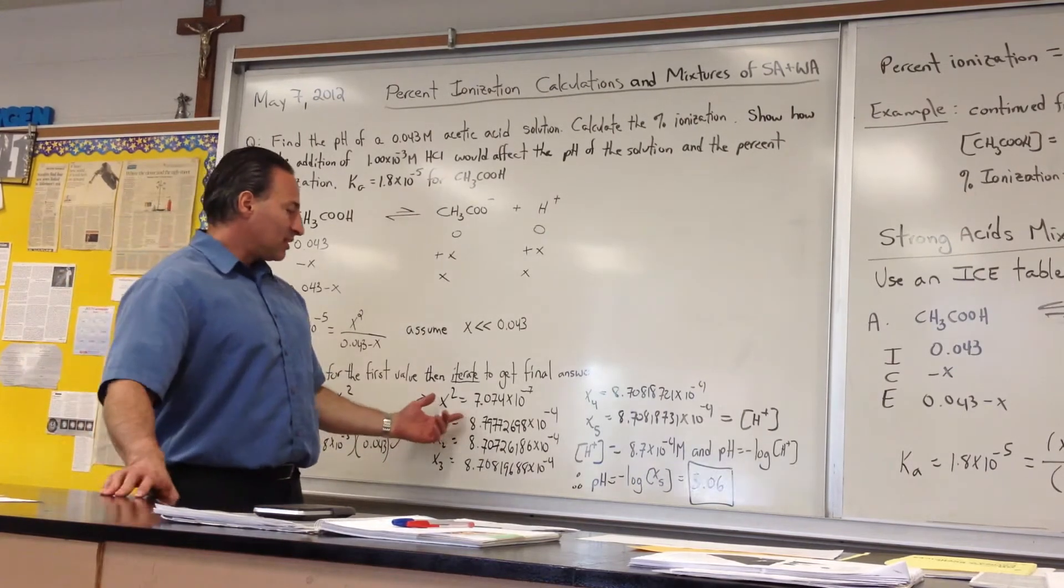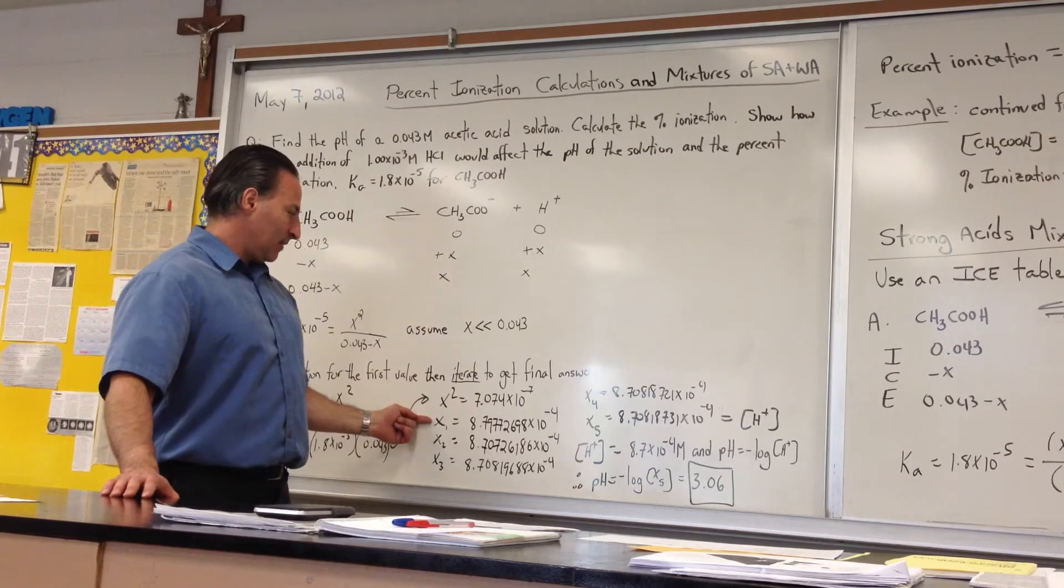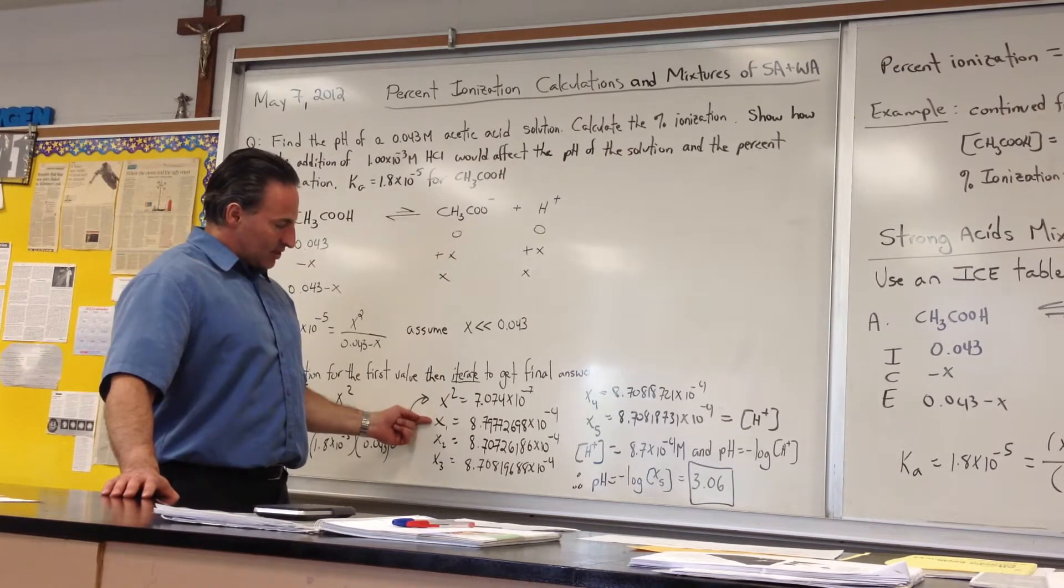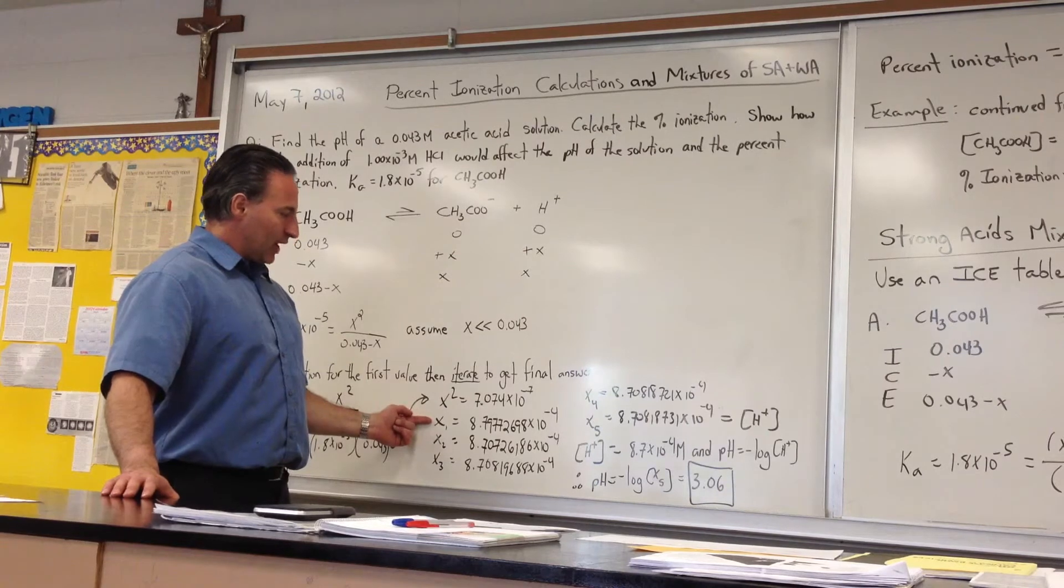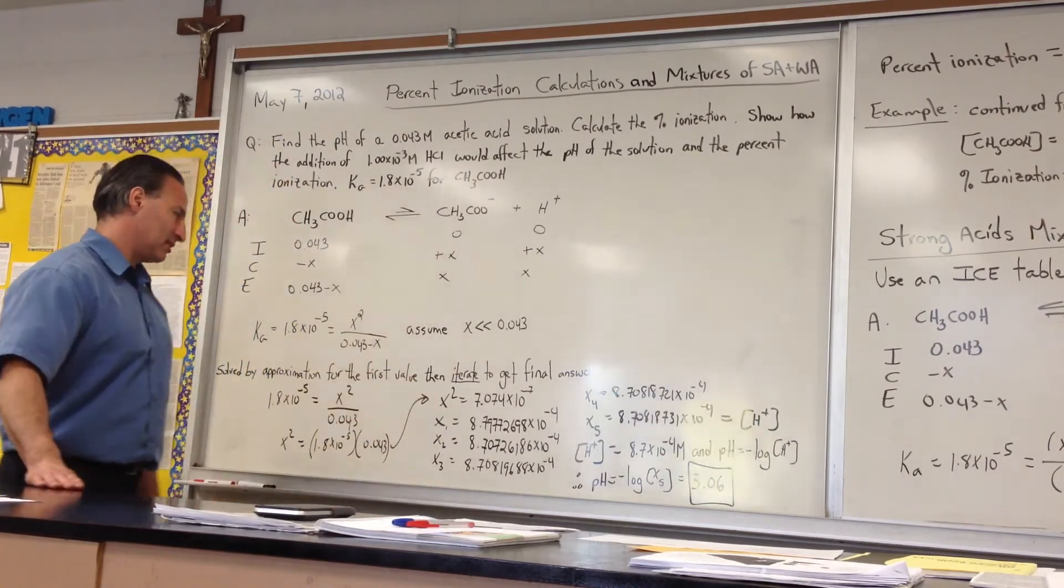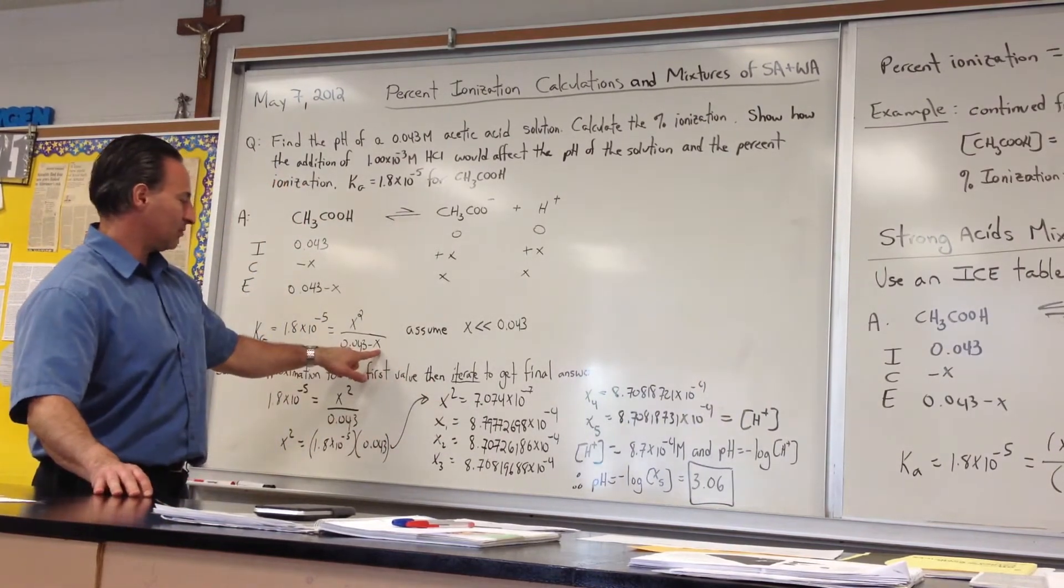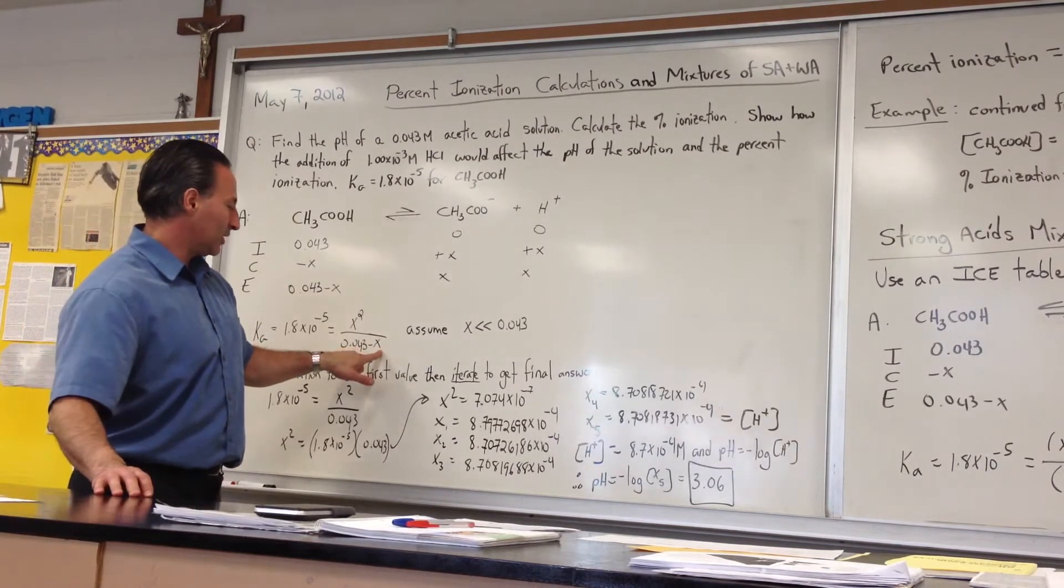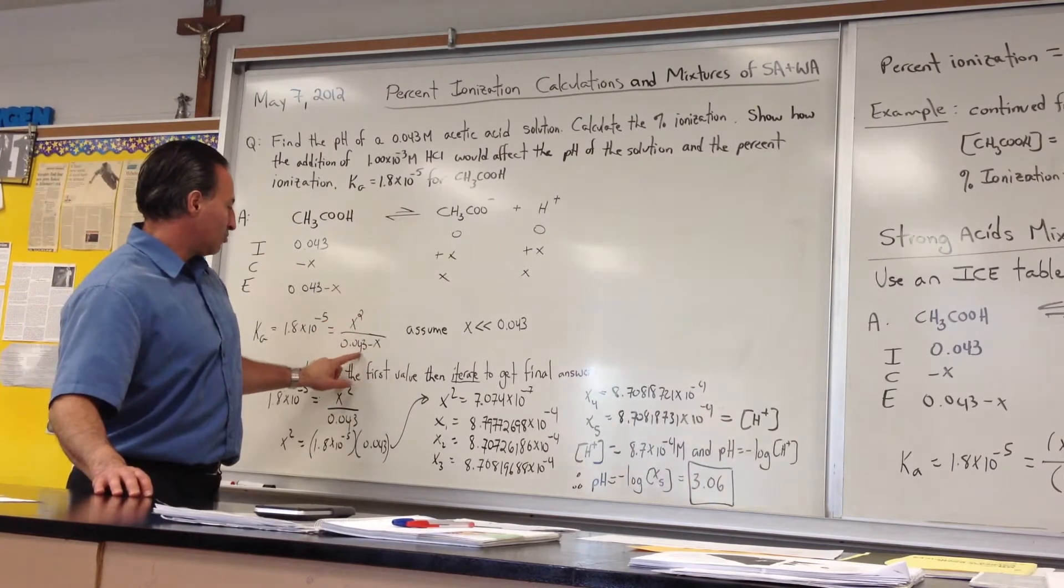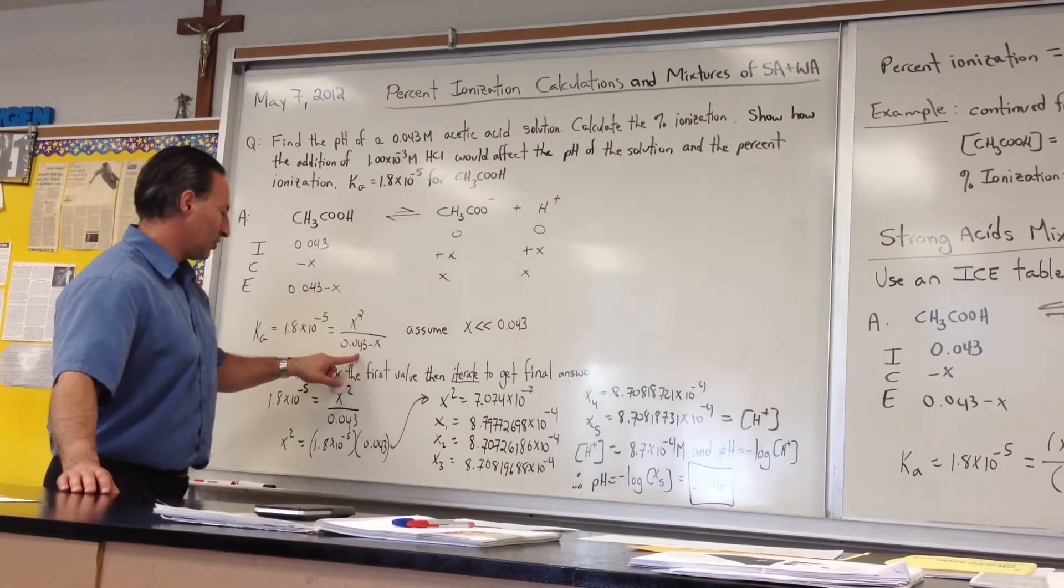But then we continue the calculation. We could stop here legitimately and still get a reasonably good answer, but I like to get the exact answer using the iterative method. So I take this answer and plug it back into this equation. This is the value of X I plug in, which subtracts a certain amount X from 0.043.